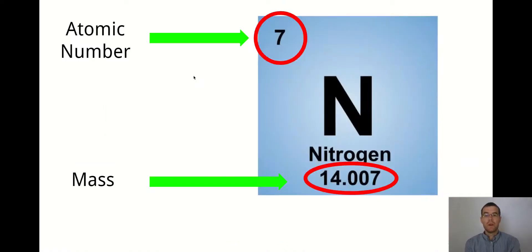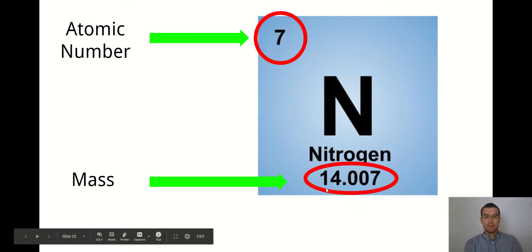Let's look at where we can find information on the periodic table. The small number at the top is the atomic number—that is the number of protons. The larger number at the bottom is the mass.